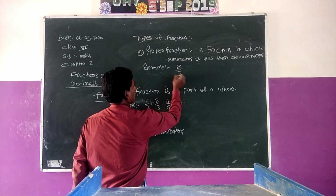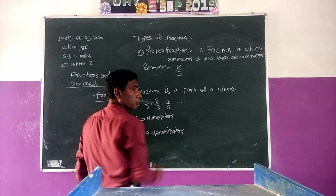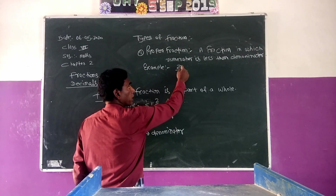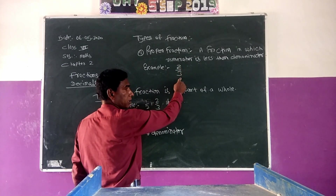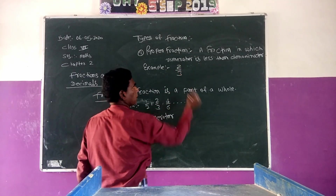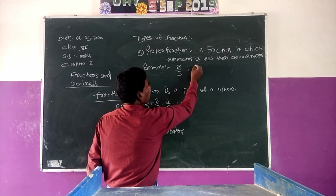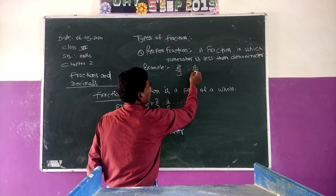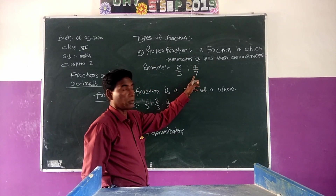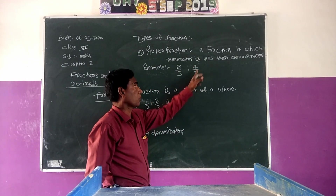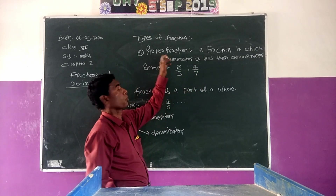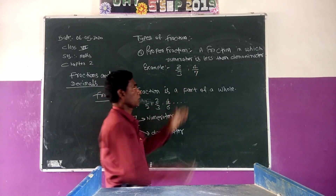Example: 2 by 3. Here we see that 2 is the numerator and 3 is the denominator, and 2 is less than 3. Another example: 4 by 7. Here 4 is the numerator and 7 is the denominator. Therefore 4 by 7 is a proper fraction.